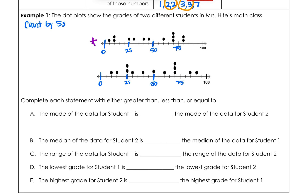I'm going to write the first data set in purple. The grades are: 5, 10, 10, 25, 30, 30, 35, 40, 45, 50, 55, 60, and three 70s, plus two 80s — nothing above those. The tallest column is at 70, so I'll circle and label that as mode.